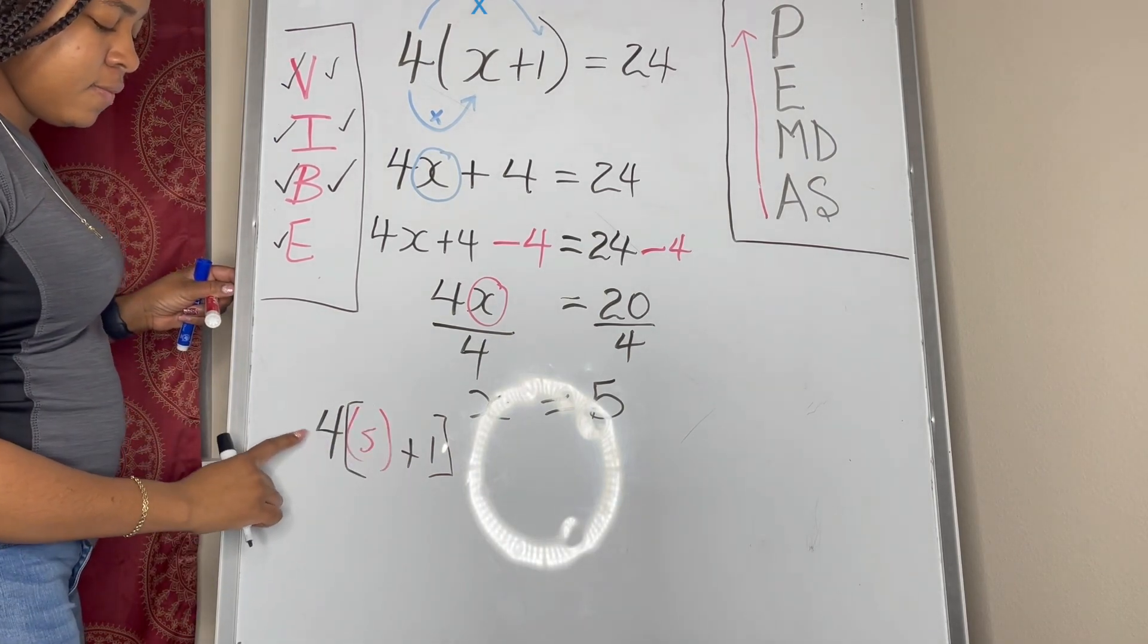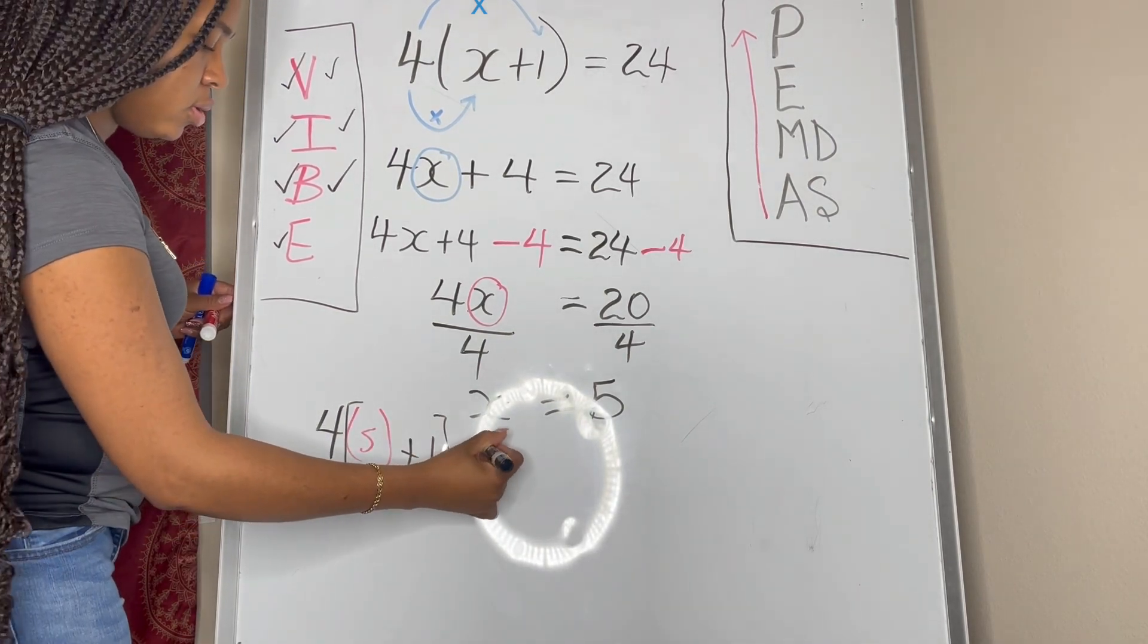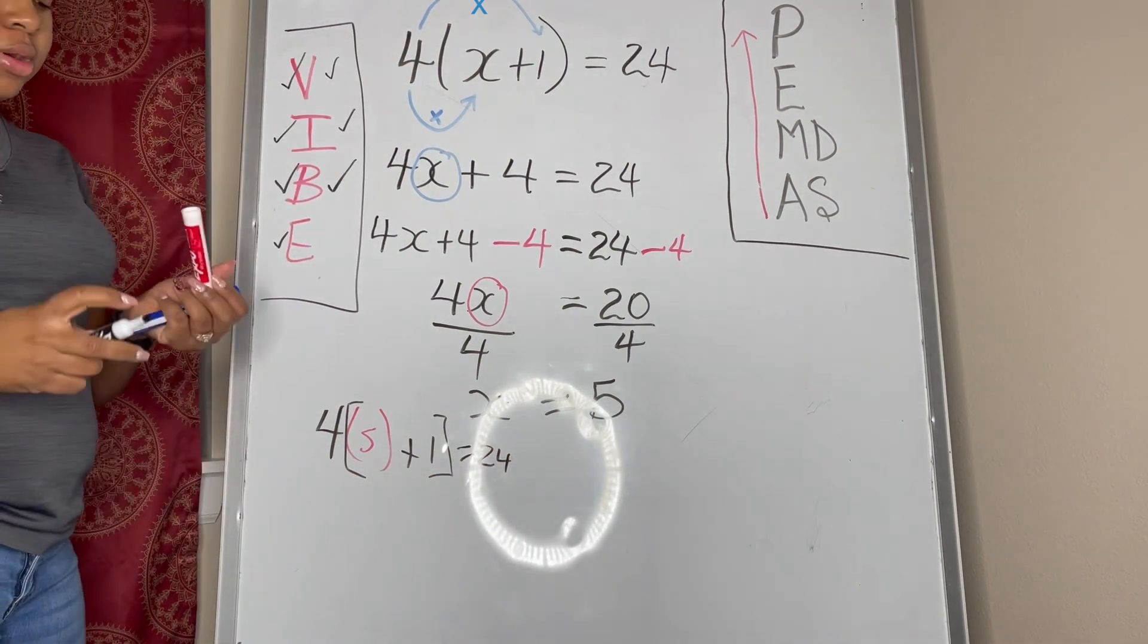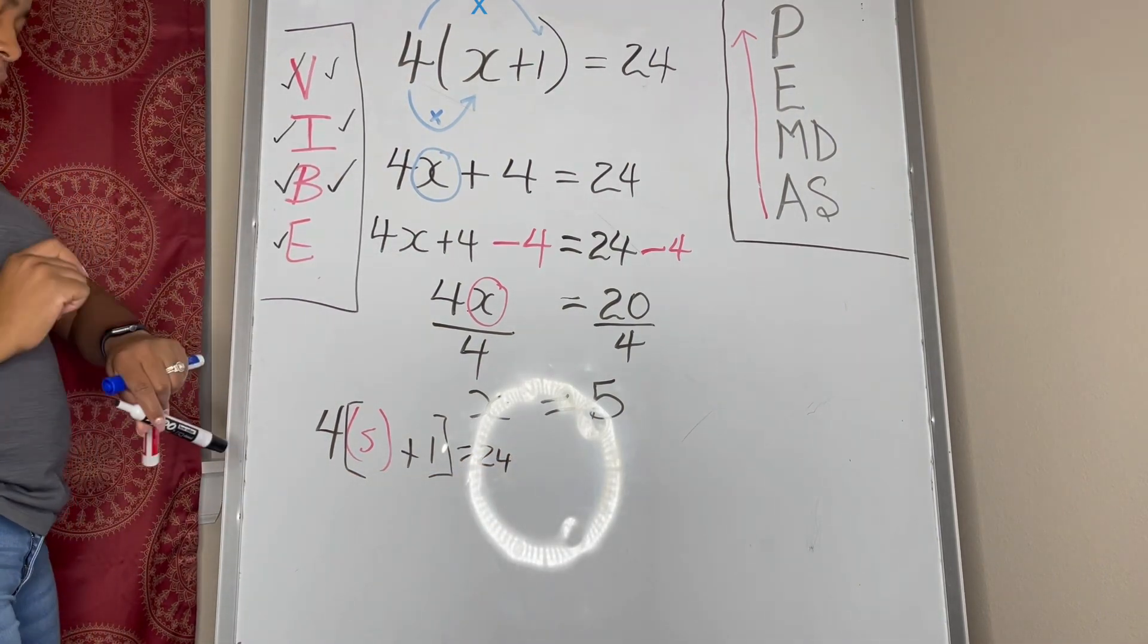So 5 plus 1 is 6, multiply by 4 is 24, which means our answer is correct. Okay, so that's the first approach.